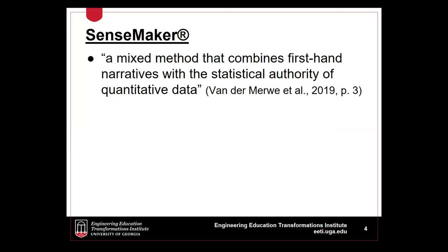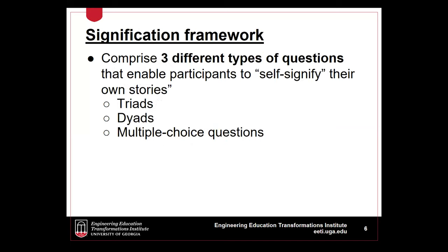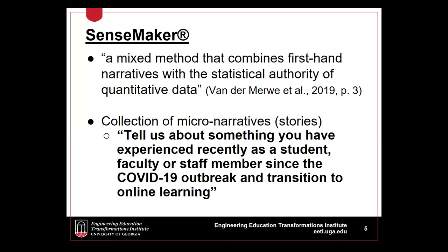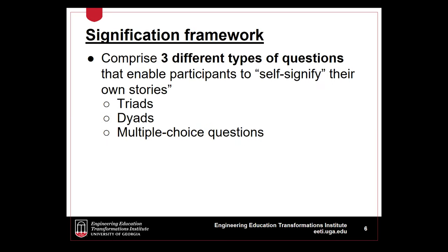SenseMaker has been described as a mixed method that combines the power of first-hand narratives with the statistical authority of quantitative data. Narratives or short stories make up the qualitative data in a SenseMaker project, collected via a prompt such as: tell us about something you have recently experienced. The quantitative data comes from how participants make sense of their own stories by answering a signification framework, which comprises three types of questions: triads, dyads, and multiple choice questions.